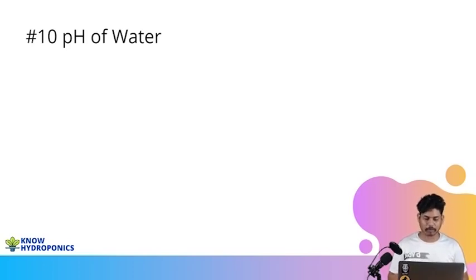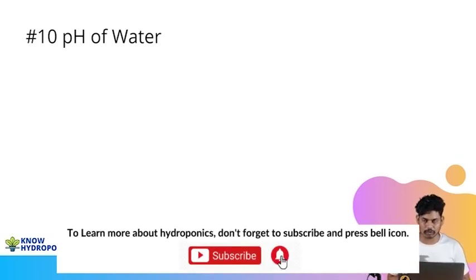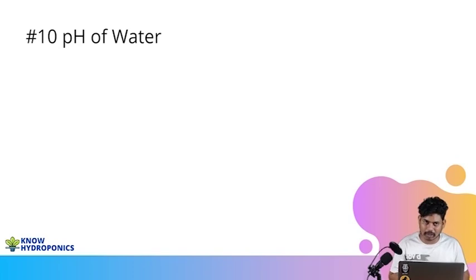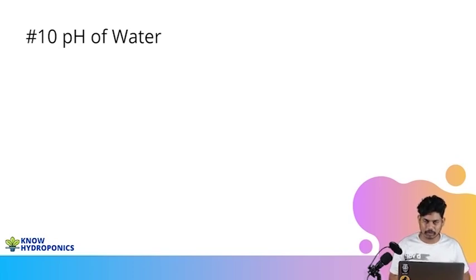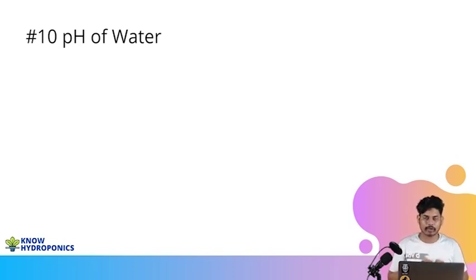When we talk about the pH of water, it's the potential hydrogen ion activity. A lot of people have this confusion: whenever we add nutrient solution into water, how are plants taking it? Plants don't search for nitrogen in the water in granular or salt format. Whenever you add any fertilizer into water, they form different kinds of ions, and hydrogen has its own ion activity — either negative or positive — in the water. Counting that potential hydrogen ion activity gives us an idea about what is the pH of the water.